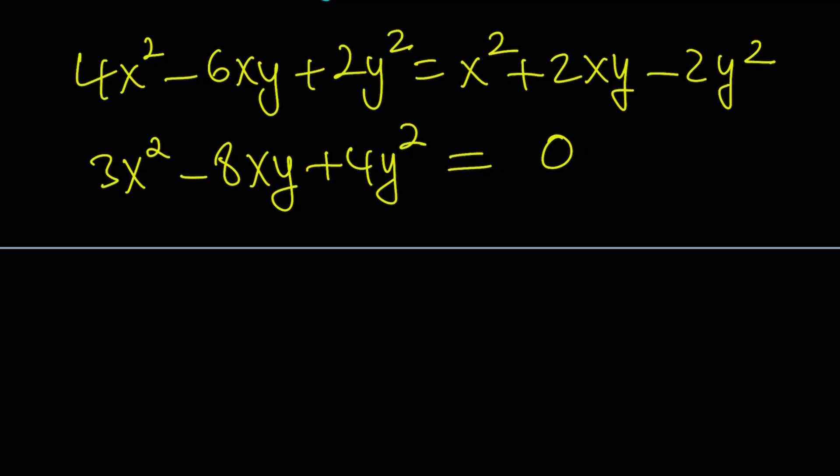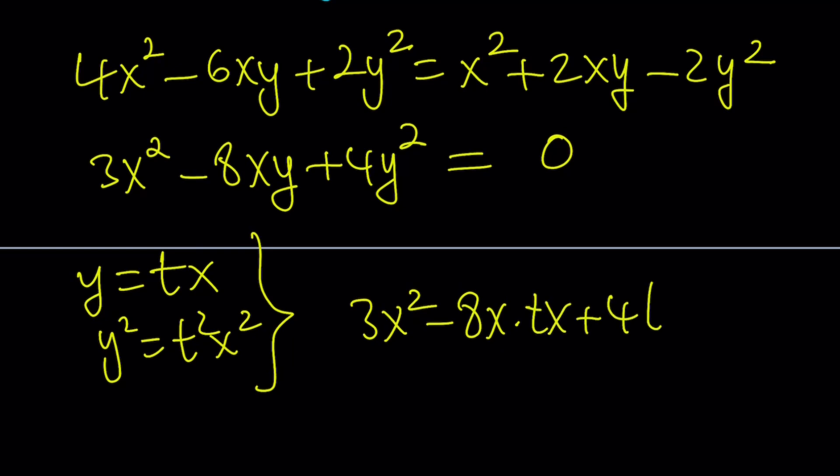How do you solve these kinds of equations? You can go ahead and call this y = tx and then that would give you y² = t²x² and let's see what happens with that. 3x² - 8x·tx + 4t²x² = 0. Now, you can go ahead and take out an x². You'll get 3 - 8t + 4t² = 0.